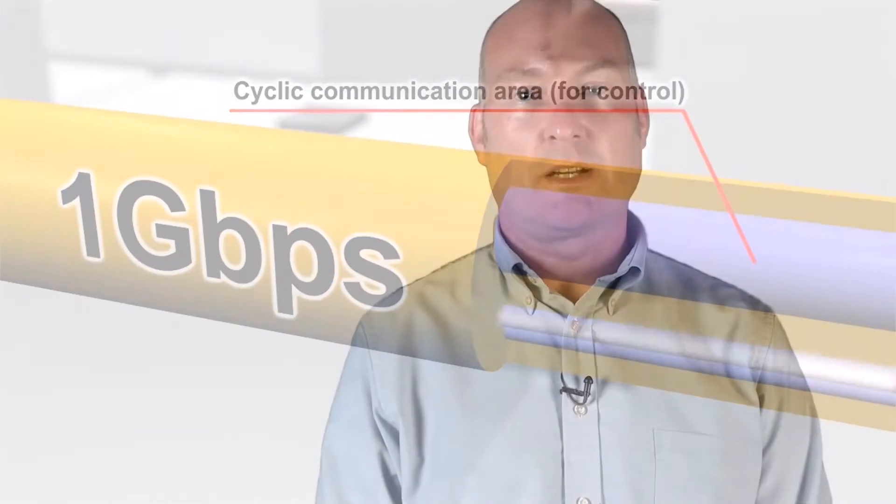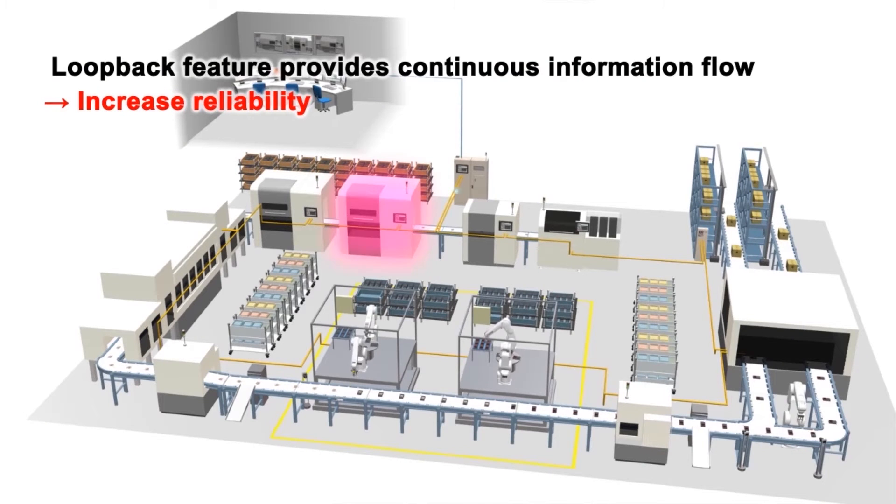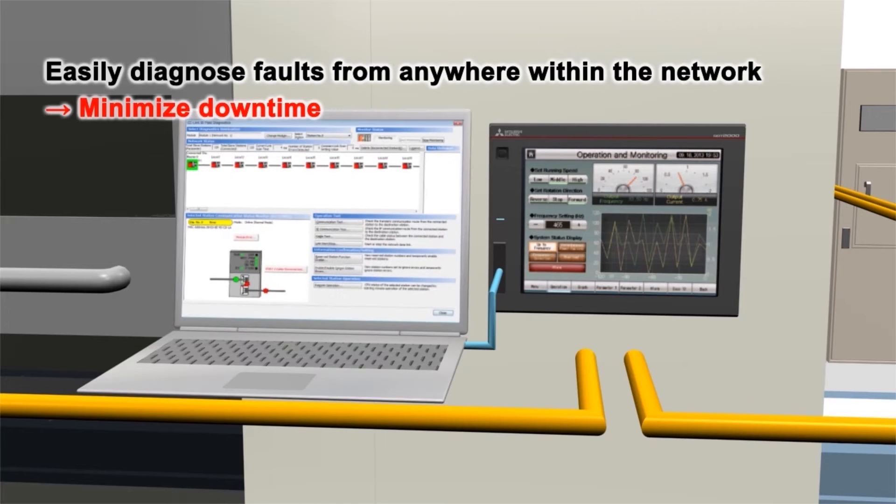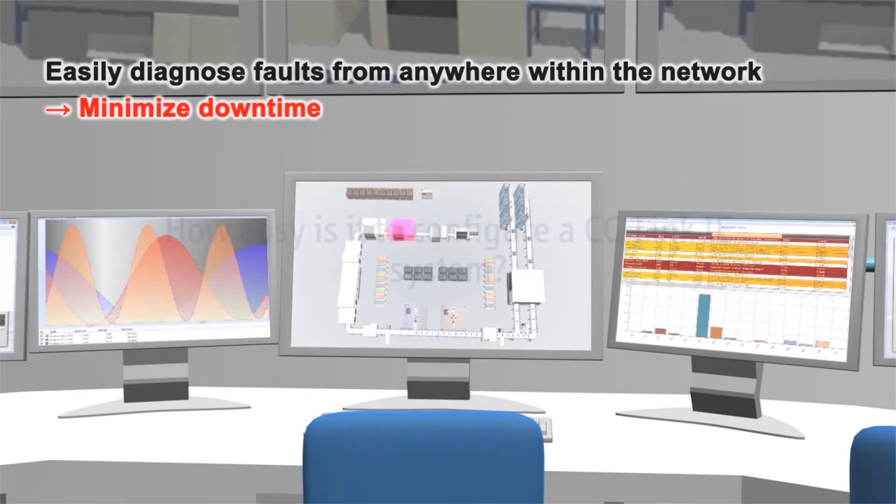For high priority unscheduled events such as alarms or lower priority information such as diagnostics, CC-Link IE offers transient communication. This allows normal cyclic network communication to continue without being impacted by even high levels of transient communication.